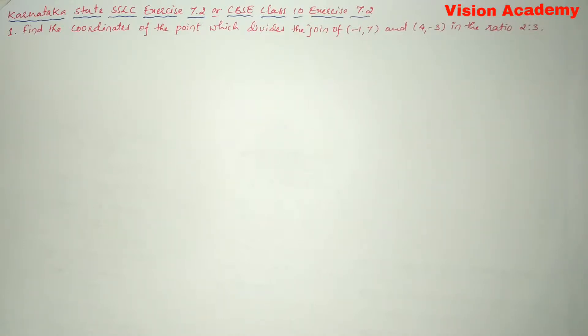In this video, we are going to solve Karnataka state SSLC exercise 7.2 or CBSE class 10 exercise 7.2. Question number one: find the coordinates of the point which divides the join of (-1, 7) and (4, -3) in the ratio 2:3.